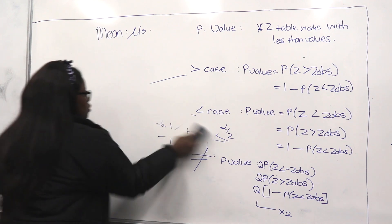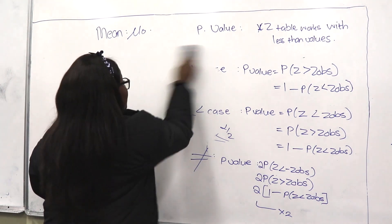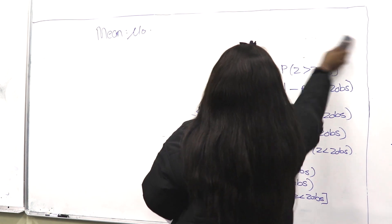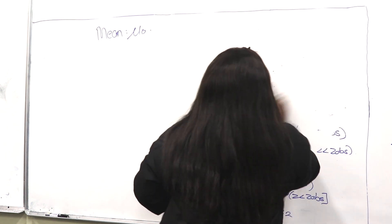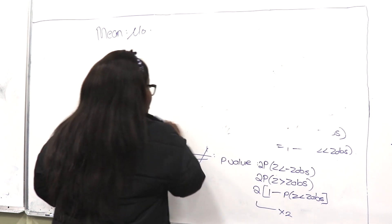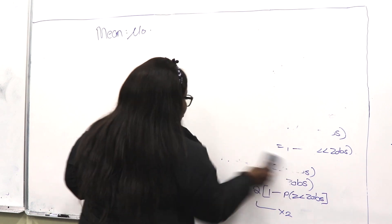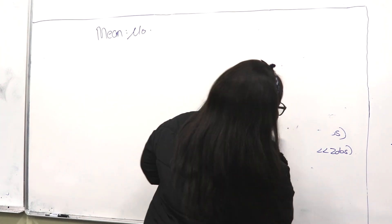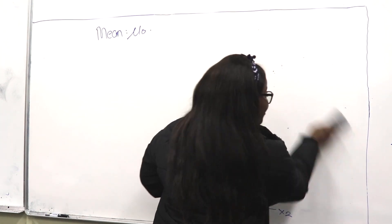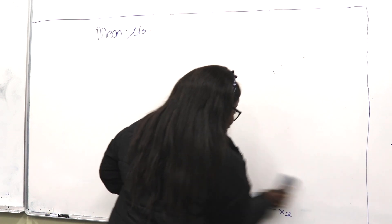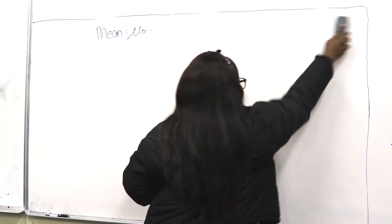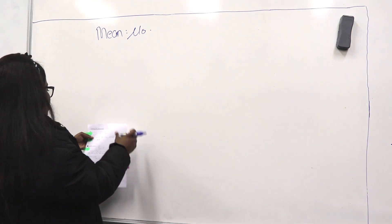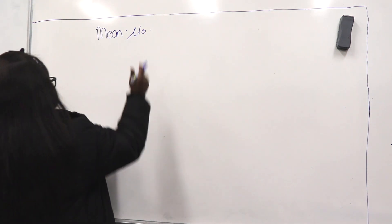We know the six steps. Step 1: hypothesis. Step 2: test statistics. Step 3: rejection region. Step 4: observed value — calculated. Step 5: p-value. Step 6: conclusion. Now for proportion.